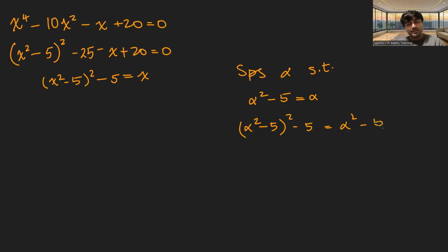If I just then subtract 5 from both sides, I get alpha squared minus 5 squared minus 5 is just alpha squared minus 5. But alpha squared minus 5 from this first equation is just alpha. And so therefore, if we have a real number or complex number, but it turns out that alpha would be real to solve this quadratic. If alpha squared minus 5 is alpha, then alpha squared minus 5 squared minus 5 is alpha.